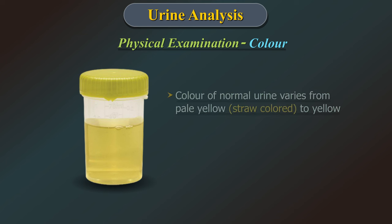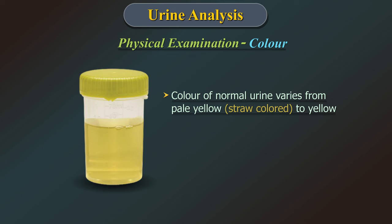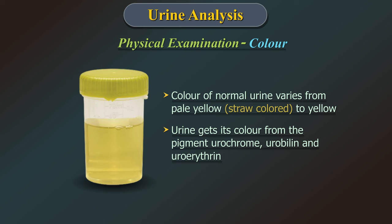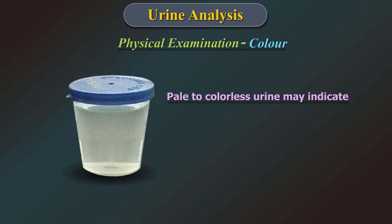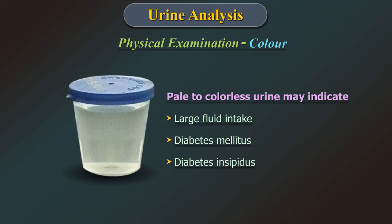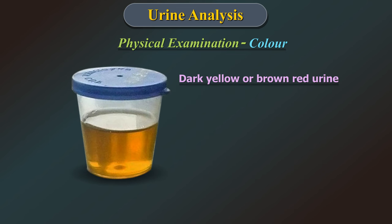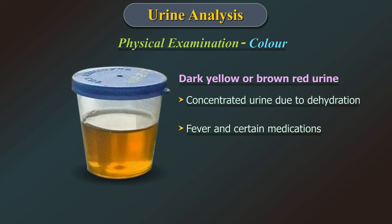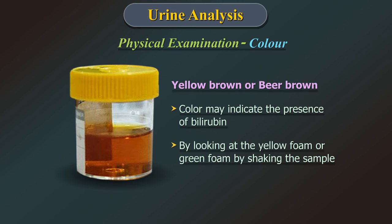We begin with colour. Colour of normal urine varies from pale yellow, that is straw colour, to yellow. Urine gets its colour from the pigment urochrome, urobilin and uroerythrin. Pale to colourless urine may indicate large fluid intake, diabetes mellitus and diabetes insipidus. Dark yellow or brown-red urine may indicate concentrated urine due to dehydration, fever or certain medication. Yellow-brown or bare brown colour may indicate the presence of bilirubin, confirmed by looking at the yellow or green foam by shaking the sample.